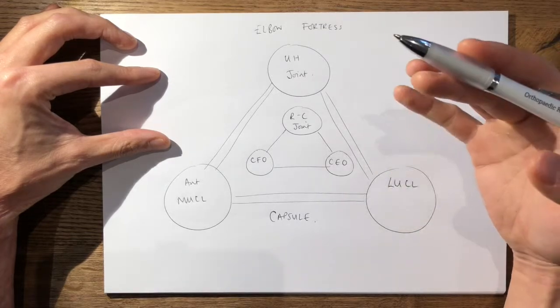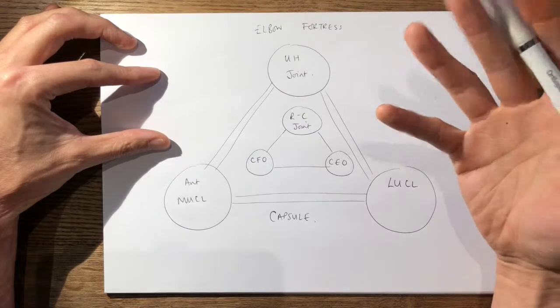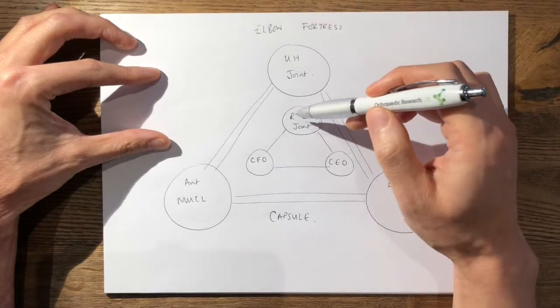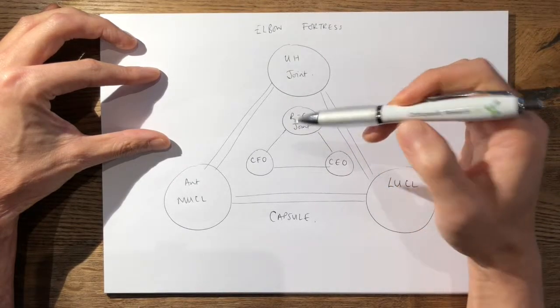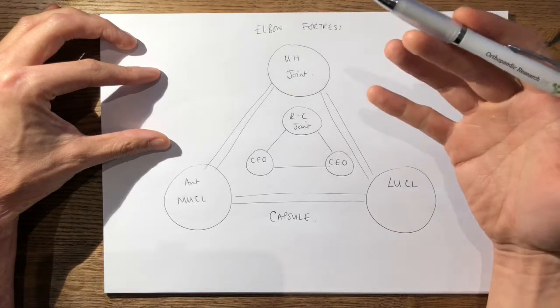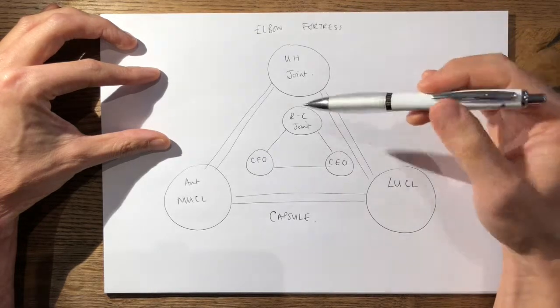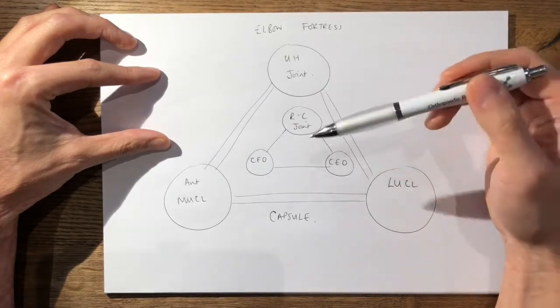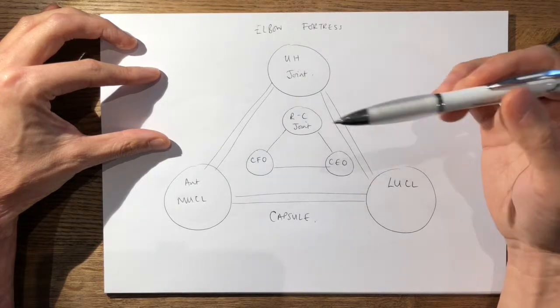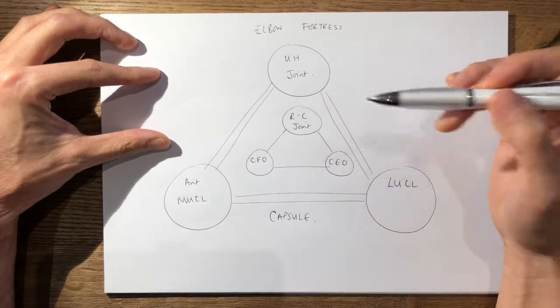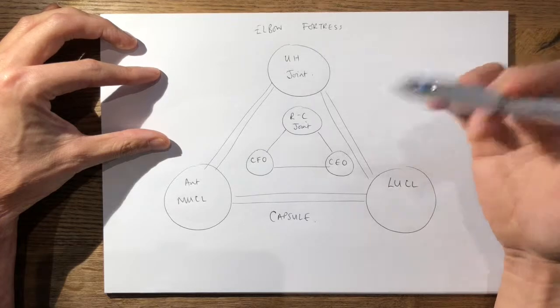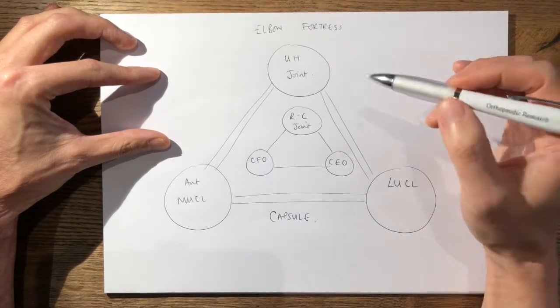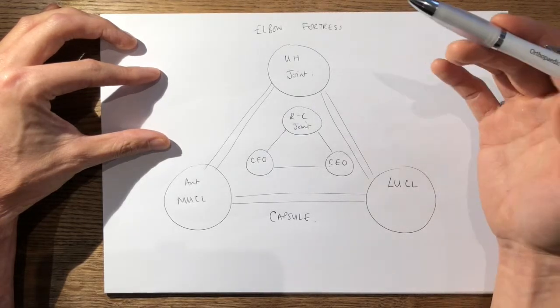if your coronoid process is fractured or lost, your radial head in your radiocapitella joint becomes a critical stabilizer. And he states that your radial head must not be removed when you have a dislocated elbow associated with a coronoid fracture, unless you can reliably fix the coronoid process or the ligaments around it.